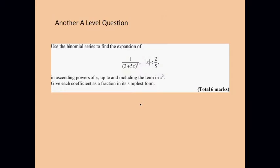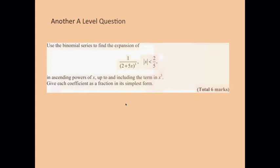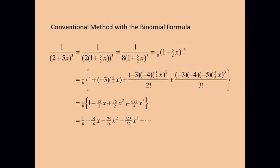Another A-level problem is this. Use the binomial series to find the expansion of 1 / (2 + 5x)³ in ascending powers of x. So what I've done here is use the conventional method, starting with 1 / (2 + 5x)³. First of all, that 2 has to come out, making 1/8 times (1 + 5/2 x)³. And then, since there's now a 1 at the start of that binomial bracket, we can apply the binomial formula. And the result is 1/8 - 15/16 x, and so on.